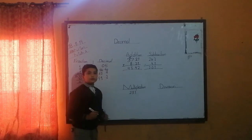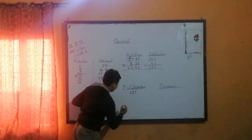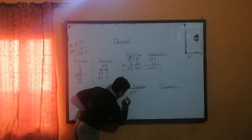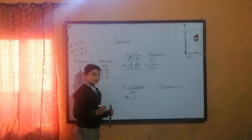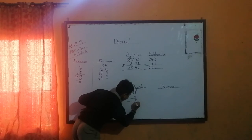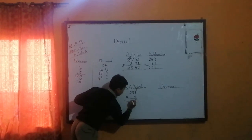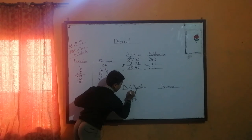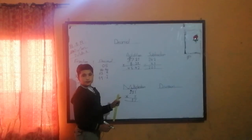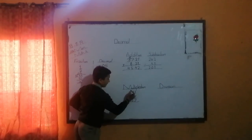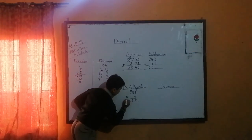23.1 multiplied by 7. 7 times 3 is 21, 7 times 23 gives 23.1 times 7 equals 161.7.